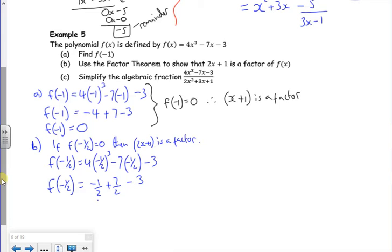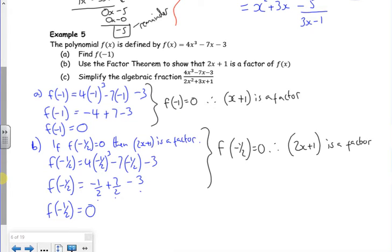I've got minus 3 and 1/2 there. I've got 3 and 1/2 there. So if I put in minus 1/2, I get 0 out, which again is quite nice. Because if f(-1/2) is 0, therefore 2x add 1 is a factor. So that's a and b done.